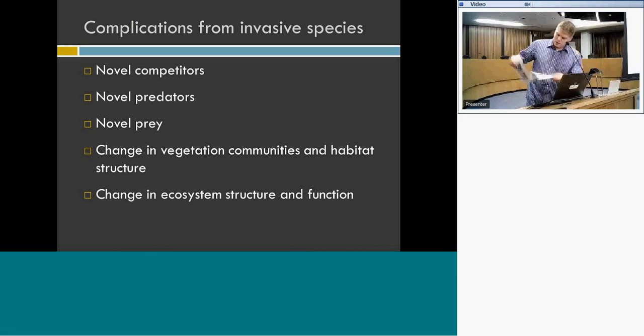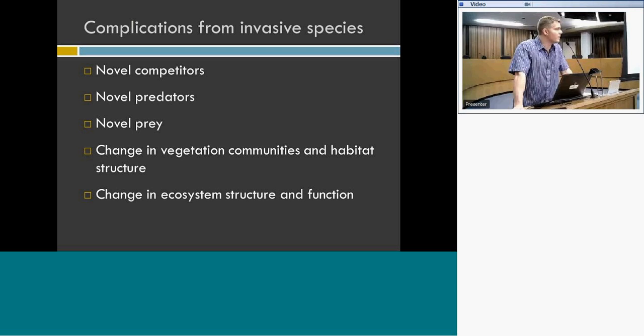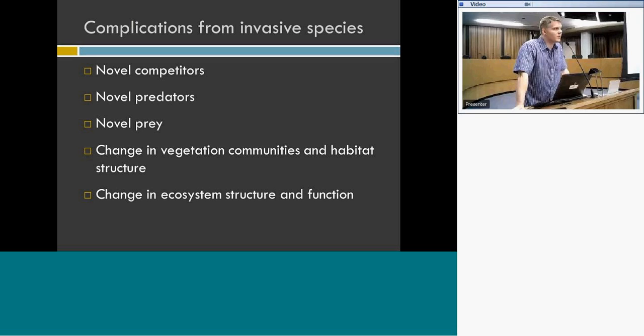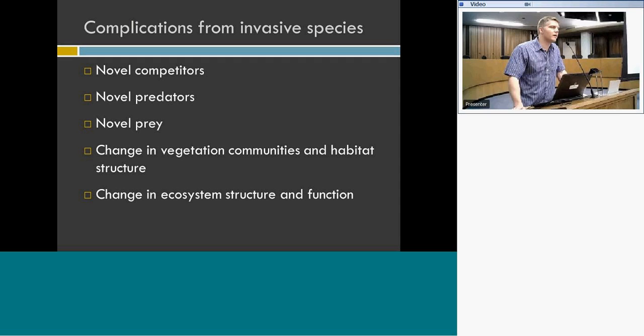Invasive species cause problems for several reasons. We're concerned about their potential impact as competitors fighting for resources with native species and out-competing them. We're worried about them eating native species. Invasive species can become new types of prey for native predators — for example, non-native catfish in parts of the Central Valley can actually kill the state and federally endangered giant gartersnake when it eats them because the spine gets stuck in its throat. Invasive plants can cause considerable change in vegetation communities, alteration of habitat structure, and changes in ecosystem structure or function.